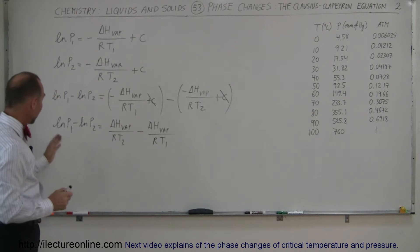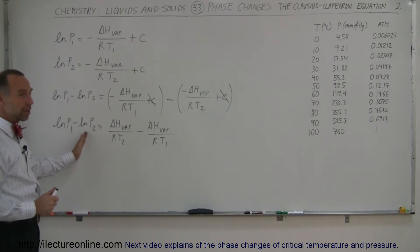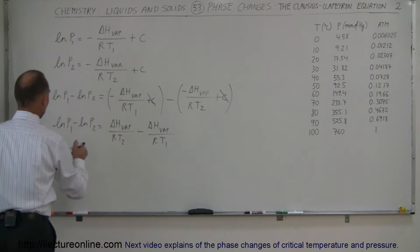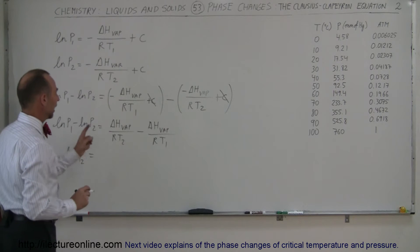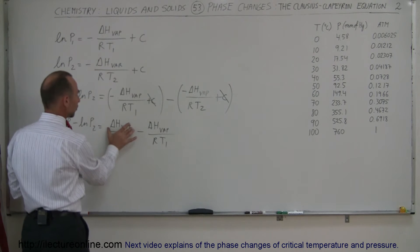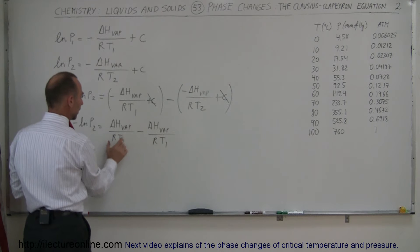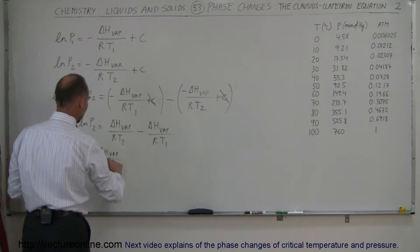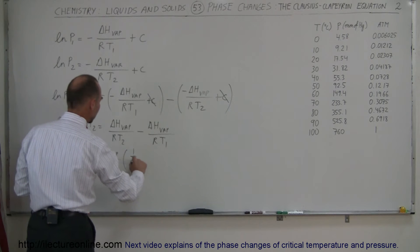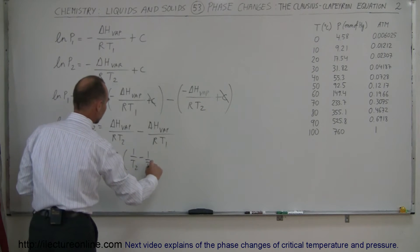We have the natural log of A minus the natural log of B, which is the same as the natural log of A over B. So I can write this as the natural log of P1 over P2. Here notice that delta H and R are common, so I can write this as delta H of vaporization divided by R times 1 over T2 minus 1 over T1.